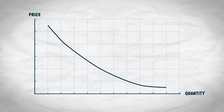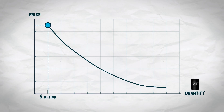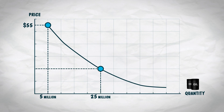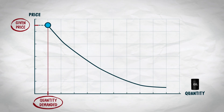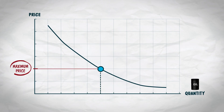The second way of reading the demand curve, the vertical method, begins at the bottom and works its way up. It tells us the value, or the maximum price, that buyers are willing to pay for a particular barrel of oil. We pick a quantity along the x-axis, say the five millionth barrel of oil, and then read up to find the value of that barrel — the maximum amount buyers are willing to pay — which is $55. How about the 25 millionth barrel of oil? We read up from the horizontal axis and then over to see that the maximum buyers are willing to pay is $20 for that barrel of oil. Both ways of reading the demand curve are useful for solving different kinds of problems. The horizontal reading tells us the quantity demanded at a given price. The vertical method tells us how much buyers value a particular barrel of oil.